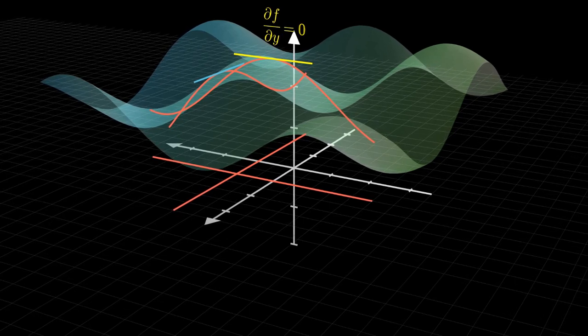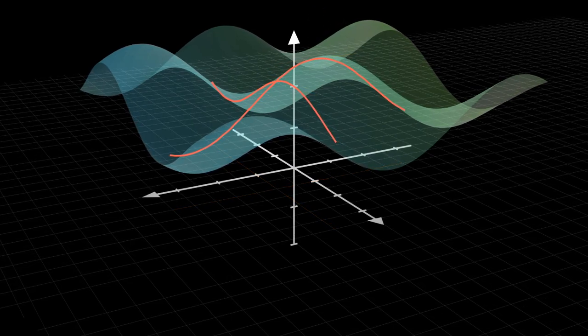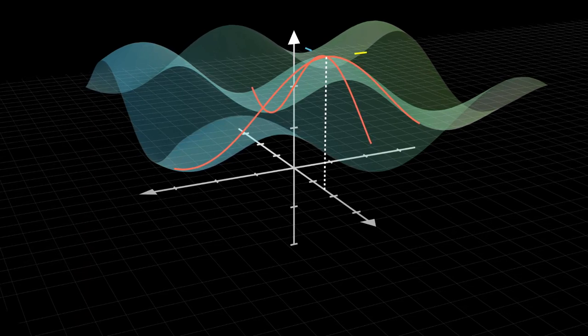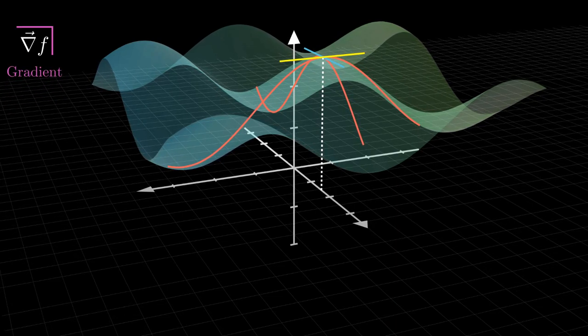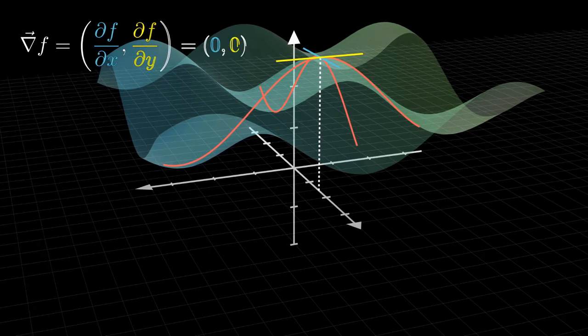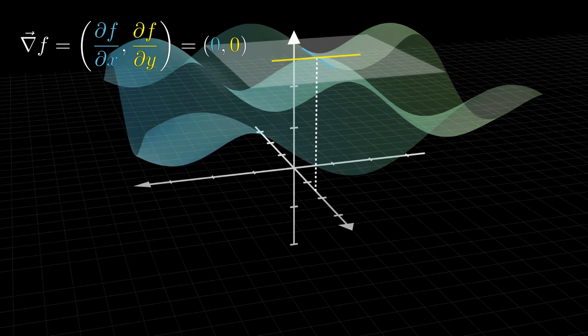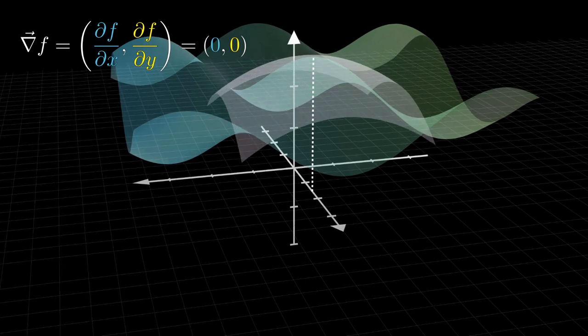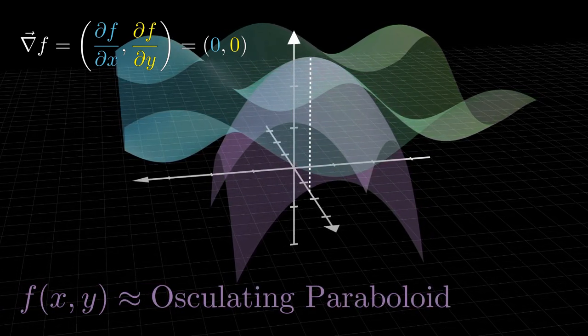As you can imagine, to find the extreme point of a function of two variables, we must look for a point that zeroes both partial derivatives at the same time. And then, we must see which point makes null what is called the gradient, a fictitious vector that has as components the partial derivatives of f. Following the same logic as before, to understand if the extreme point is a maximum or a minimum, we could approximate the function to the three-dimensional analog of a parabola, that is, an osculating paraboloid.